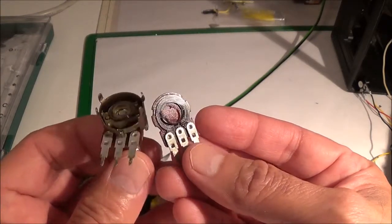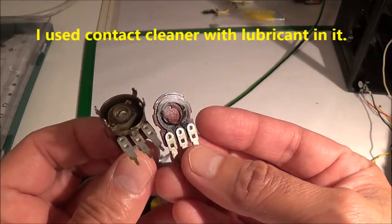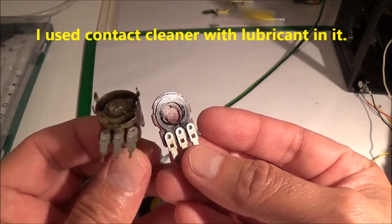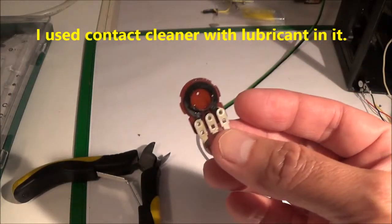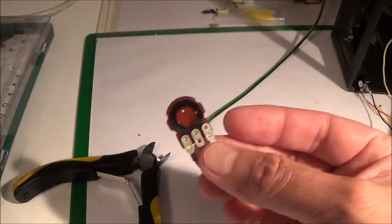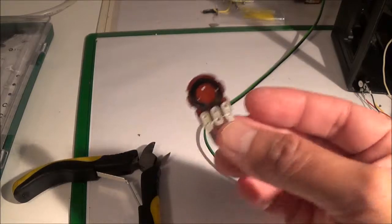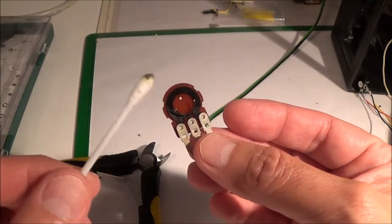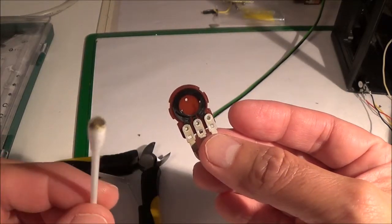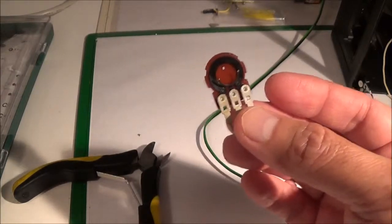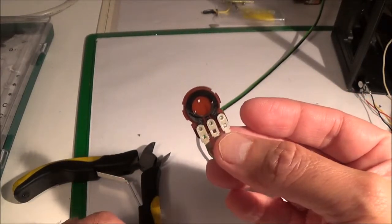So what I did is I just took some of my contact cleaner with lube, sprayed it in there, and then I used my cotton swab and cleaned it up a little bit. And now I'm going to go ahead and put it back together.